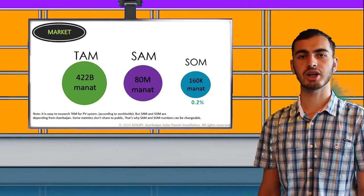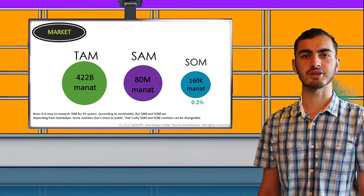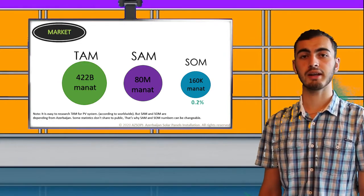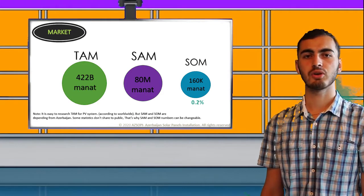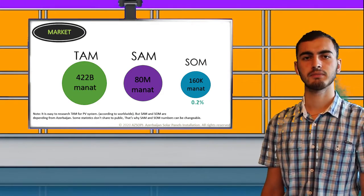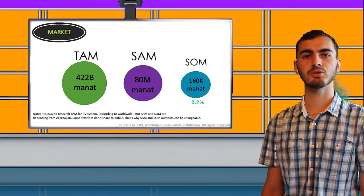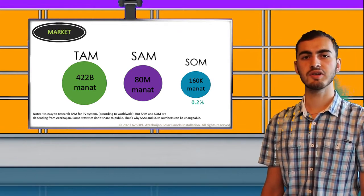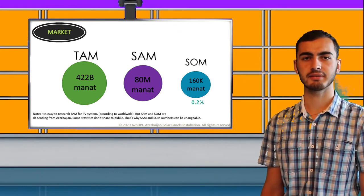SOM, which means share of the market, is 0.2%. Of course, we are not alone in the market. We have a lot of competitors, so we cannot take monopoly of this market. In the beginning, we are planning to get 160K, which is 0.2% of this market.